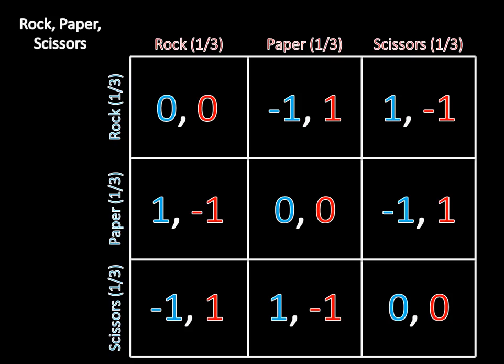Since expected utility is equal across all pure strategies, a player has no profitable deviation — they can't change strategy and do better. So they're indifferent, which means this is a mixed strategy Nash equilibrium. To quickly verify for player one's payoffs: if player one plays rock, they get zero with probability one-third (player two plays rock), negative one with probability one-third (player two plays paper), and positive one with probability one-third (player two plays scissors). That's one-third times zero, minus one-third, plus one-third — the last two cancel out, giving zero.